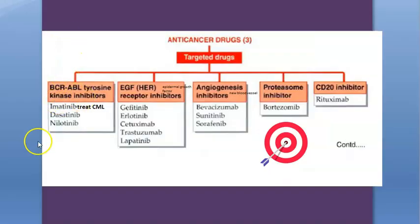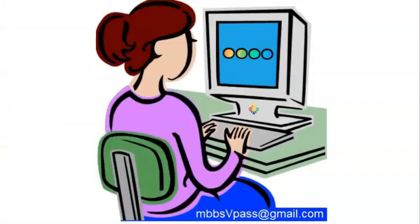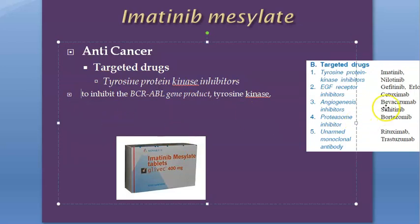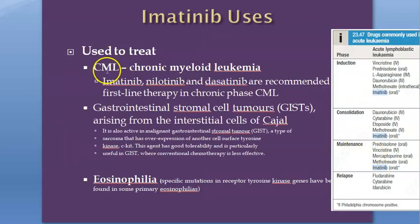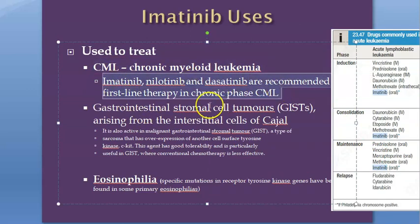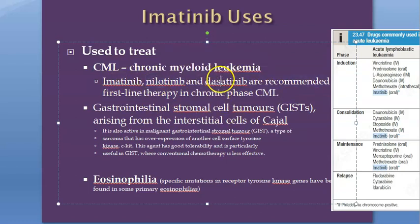So to summarize: imatinib is a targeted drug, it is a BCR-ABL tyrosine kinase inhibitor, and its main usage is to treat chronic myeloid leukemia. There are other drugs in this class - nilotinib and dasatinib - but in the exam they will likely only ask you about imatinib, so learn that one.